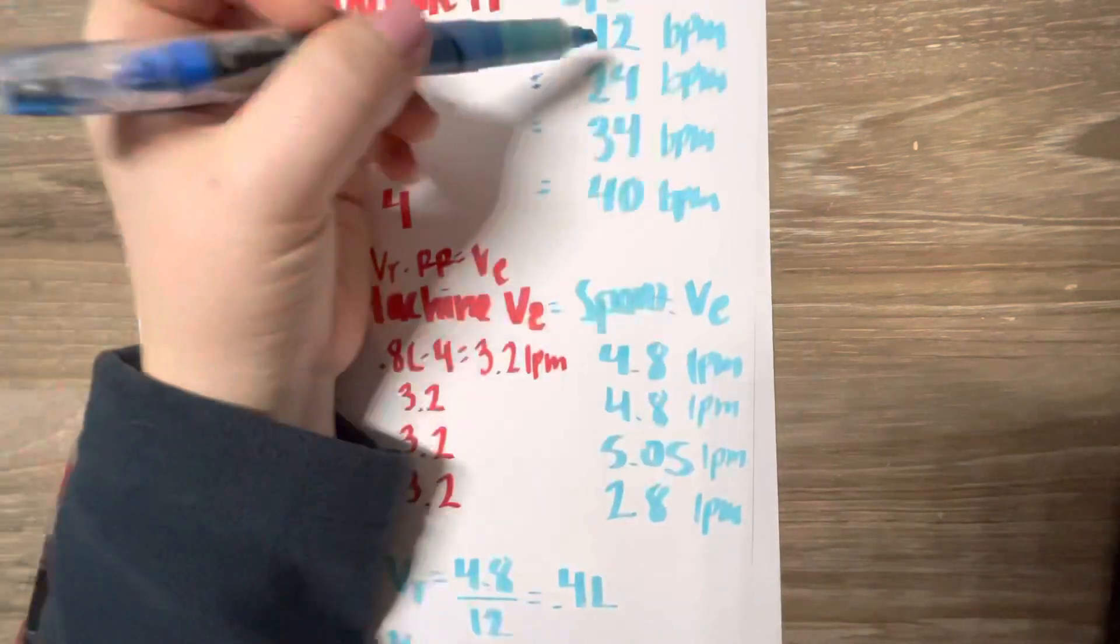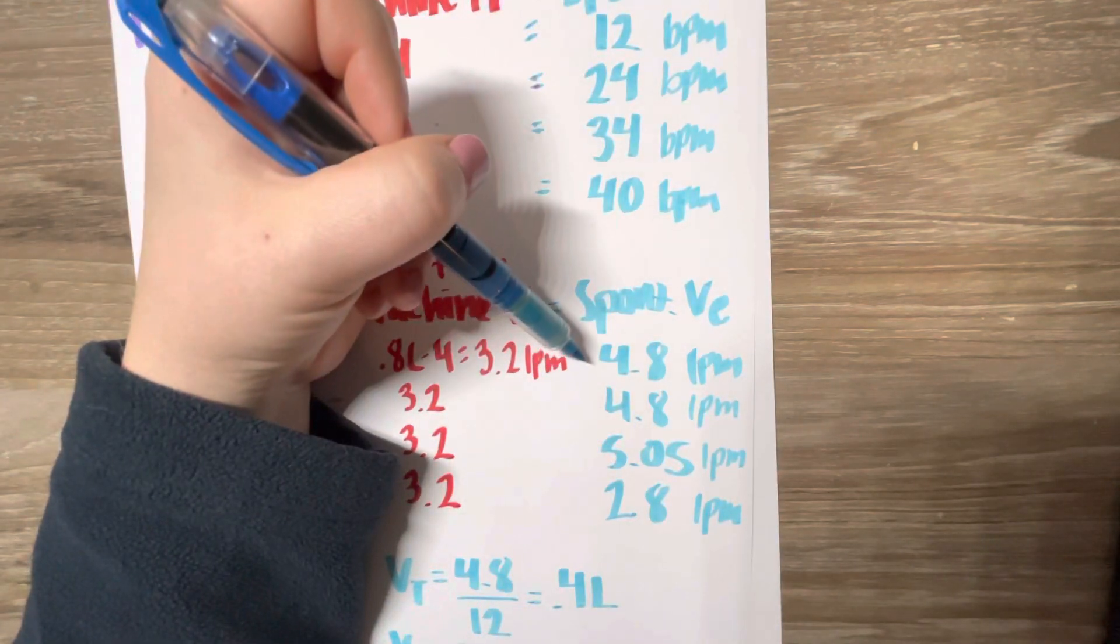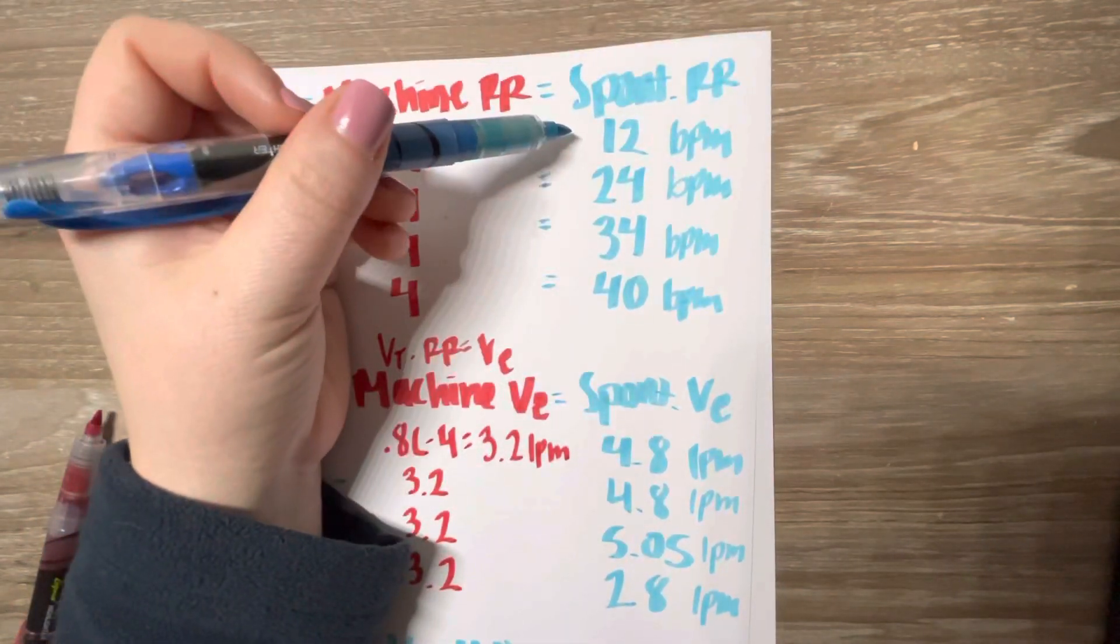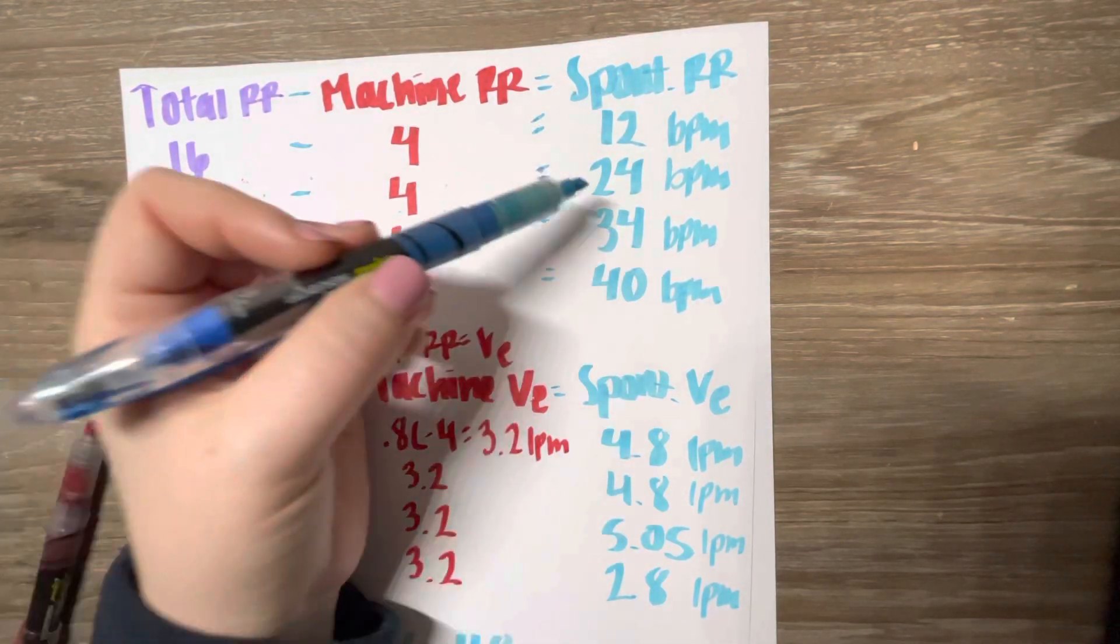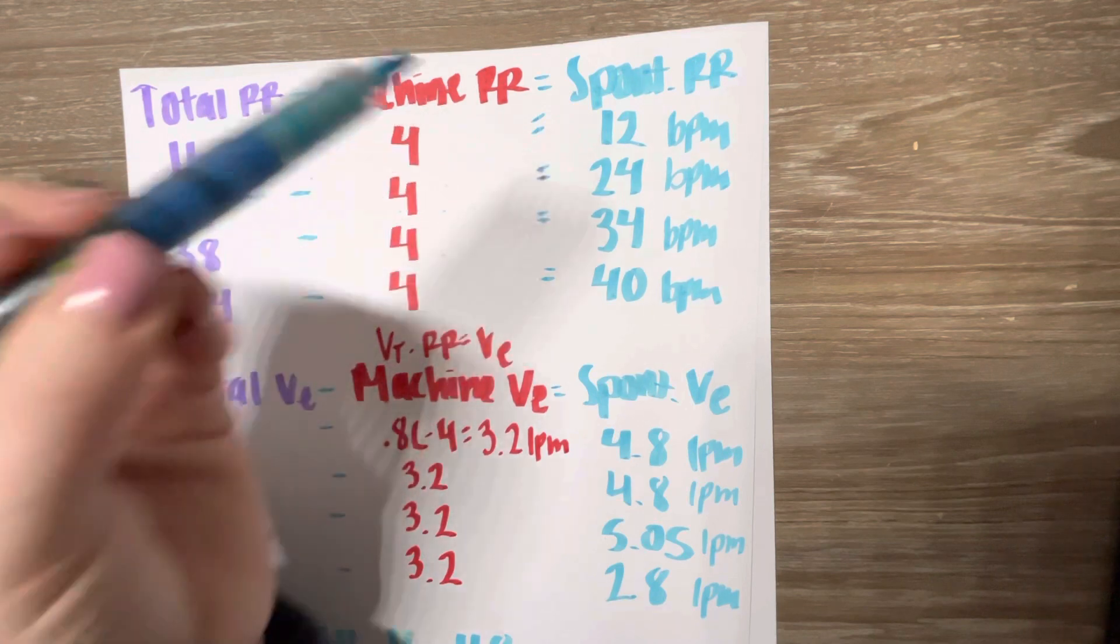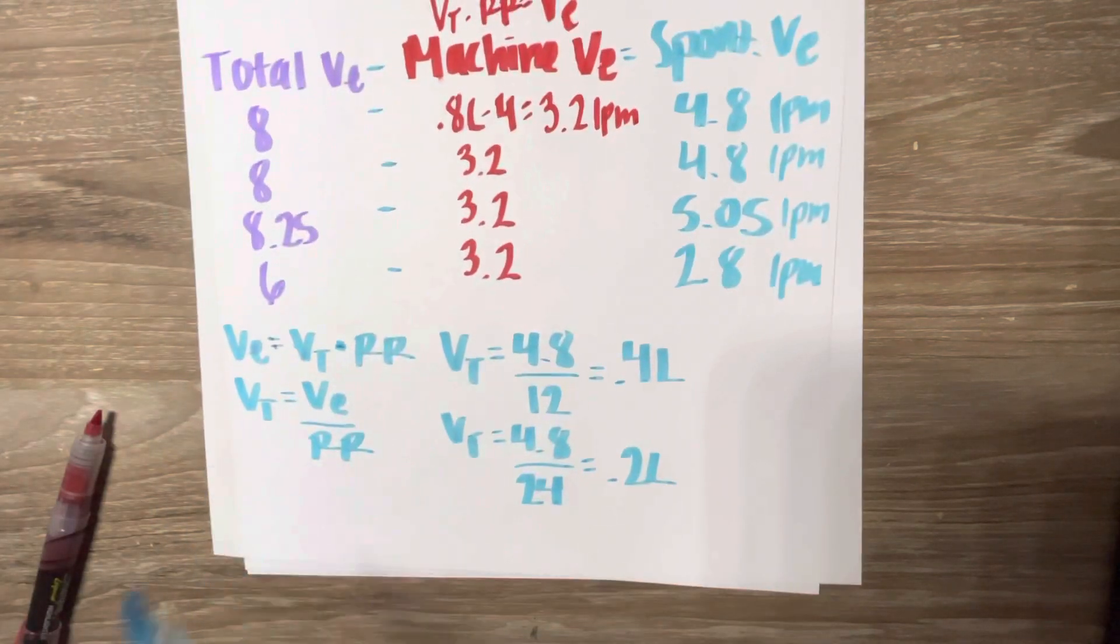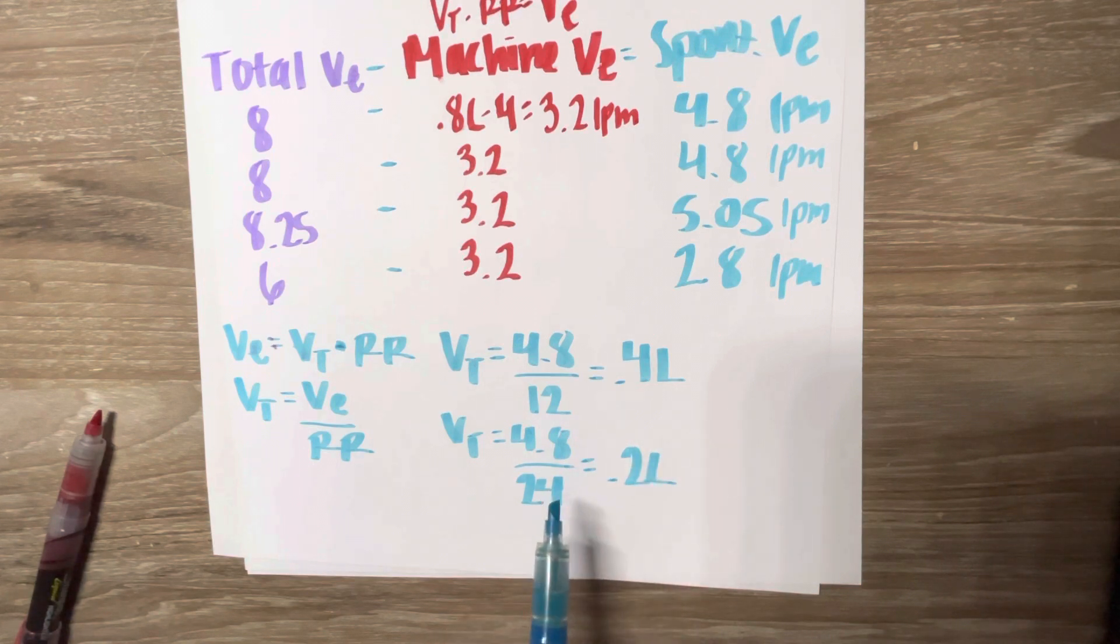So I did the first one, I'm doing 4.8 divided by 12. Same thing for the second one, 4.8 divided by 24. For the first one, I got 0.4 liters. For the second one, I got 0.2 liters.